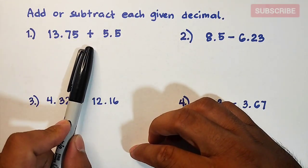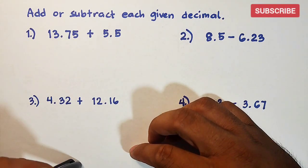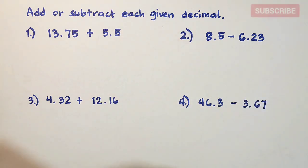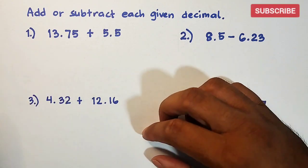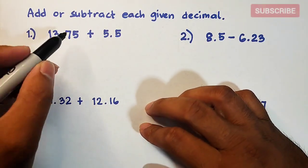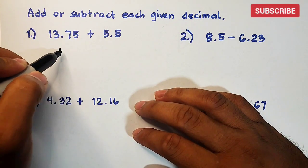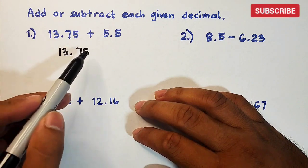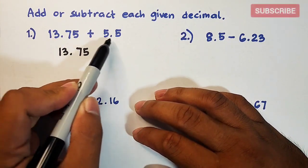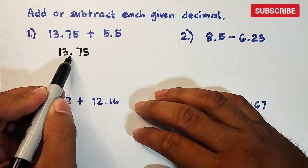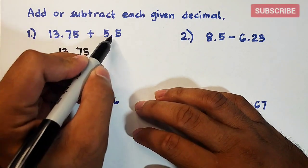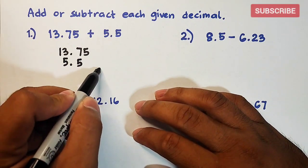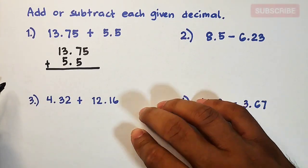Number one: we have 13.75 plus 5.5. The first step is to align the given decimals in vertical form, and you need to align the decimal points in each given decimal. So we have 13.75, and the next decimal is 5.5. We need to align this point from the first decimal — copy the 5 and 5 — so the decimals are aligned in vertical form.